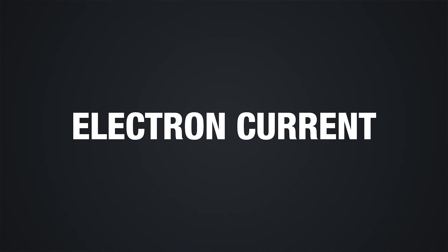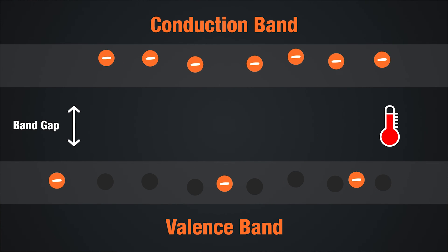At room temperature, intrinsic silicon crystal gains enough heat energy that enables some of the valence electrons to jump into the conduction band, becoming free electrons. When this happens, vacancies are left in the valence band within the crystal.